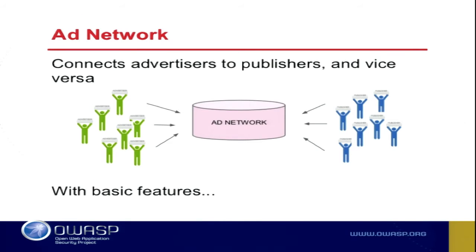As ad servers popped up, an interesting thing started to happen. There were all these publishers and advertisers. If you look at the internet, there's vertical-specific content — specific buckets of users interested in certain types of content. Ad networks were basically invented as a way to roll up every website that, say, talks about credit cards and comparisons — aggregating all that inventory and then going to advertisers to offer more scale. The networks became brokers, middlemen aggregating both sides of the equation to offer more scale and more specific targeting to an advertiser.